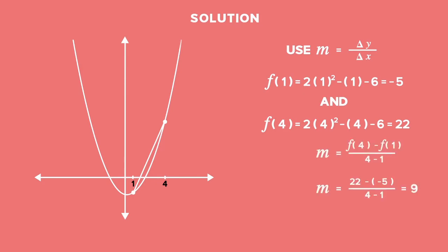So m equals 22 minus negative 5, divided by 4 minus 1, which equals 9.